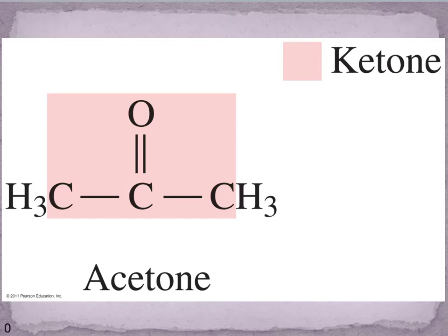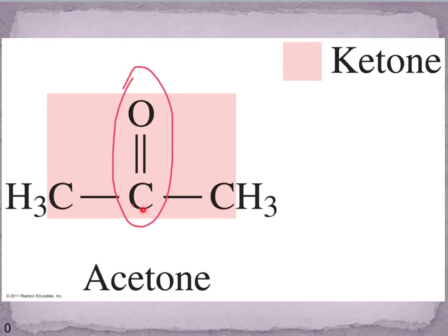Now looking at ketones: a ketone has a carbonyl group just like an aldehyde, but the difference is that we have bonds to two different carbon groups from the carbonyl carbon. That central carbon is called the carbonyl carbon. For IUPAC naming, ketone molecules have the ending '-one.' Acetone is actually a common name — it's one of the most common ingredients in nail polish removers — and that '-one' ending tells us we're dealing with a ketone.